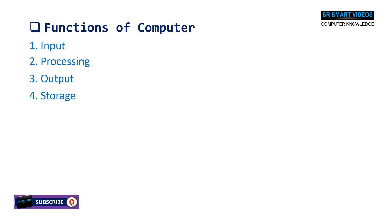This topic explains the basic functions of a computer system. Based on the fundamental working of a computer system, a computer mainly has four basic functions. They are input, processing, output, and storage. Learn the basic functions of a computer system through diagrams with details.